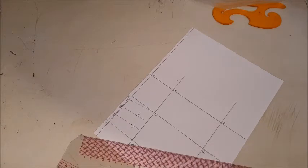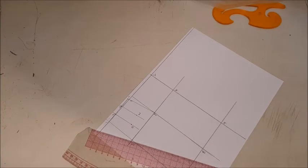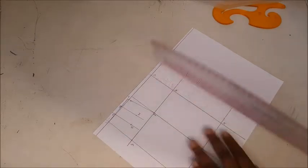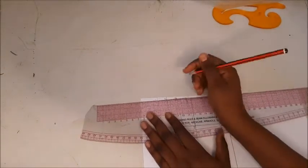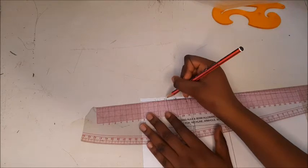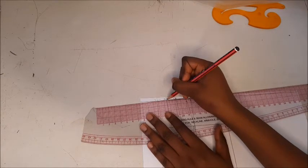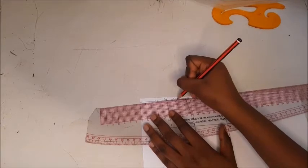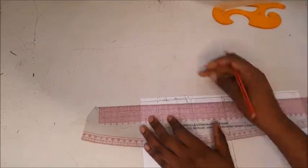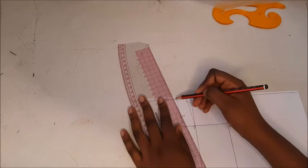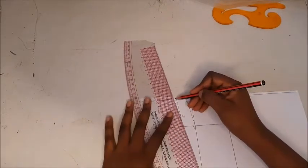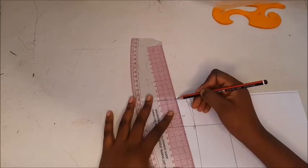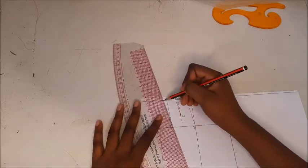Remember that four centimeters we added at our waistline, that measurement was for our darts and each of our darts are two centimeters wide. Mark one centimeter on each of the lines and distribute it evenly so that you have your darts. Now draw in your dart legs, meaning joining the two points that you have drawn to the point that you drew earlier on, which was our dart point.